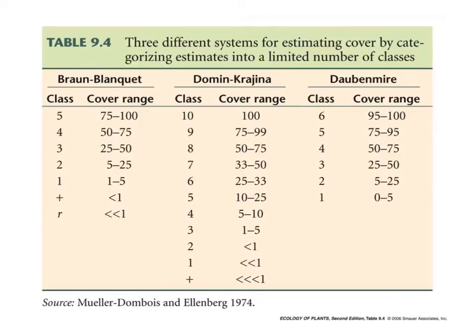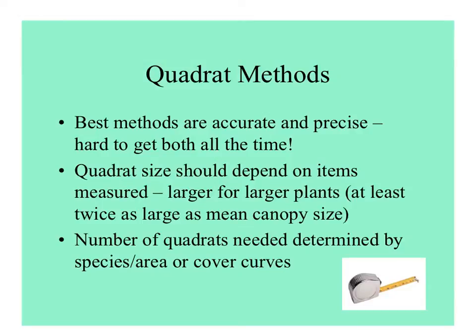There are a few other scales used in vegetation ecology: the Domin-Krajina and Daubenmire scales. Whatever scale you use, it doesn't matter as long as you're consistent within your study and you know what the numbers mean. For any of those scales, you use quadrats, although you could also do some of those methods by eyeballing and estimating.